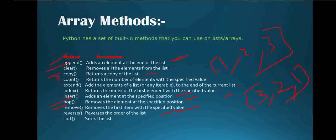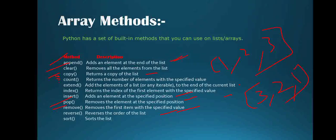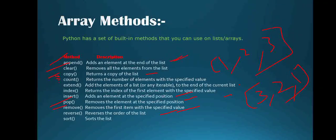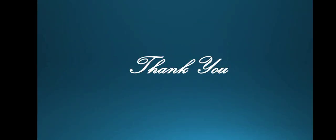The sort method sorts the list in ascending order, meaning from smallest to biggest. This covers all array built-in methods. I hope everyone understood what an array is, how to add and access elements, how to remove or pop elements, what the built-in methods are, and how to find the length of an array. If you have any doubts, please comment in the comment section.